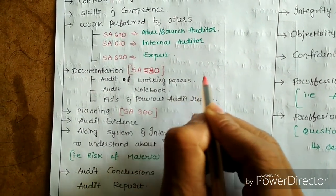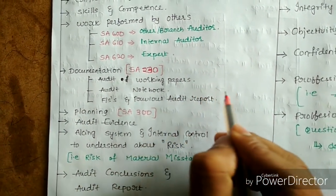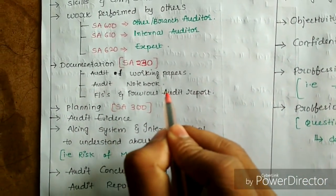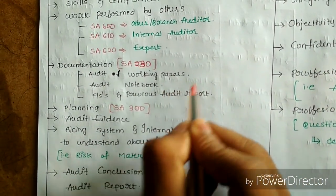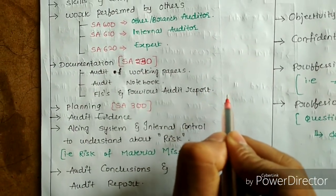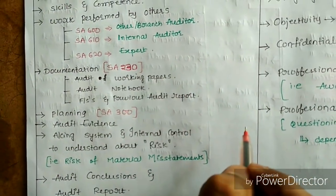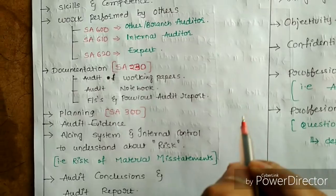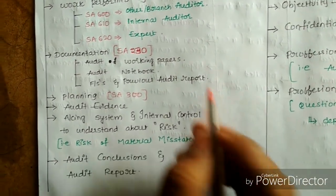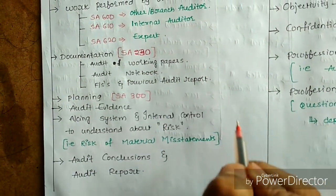Documentation includes audit working papers — the auditor's findings — and the audit notebook covering audit planning, audit program. The audit notebook and working papers need to include matters prescribed by law and other statutes, and previous audit reports should also form part of documentation.